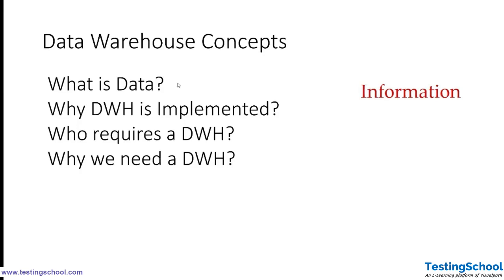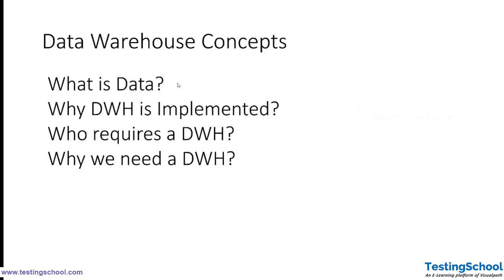Information is data that has been organized in a meaningful way and has value — data is the raw format, information is the organized data from which we can make out meaning and value. Knowledge is processed data or processed information that conveys understanding or learning applicable to a problem or an activity. Once you have organized data or information, you can process it using ETL tools to get knowledge and insights, and to see if it is serving the purpose and meeting the criteria from which the organization gets benefit.